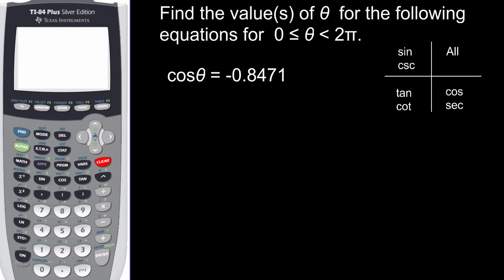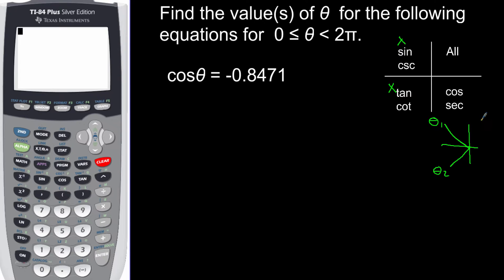Let's take a look at our first example: find the values of theta for the following equations, where zero ≤ θ < 2π — that's one full circle, one revolution. Now my function here is cosine of θ equals negative 0.8471. So cosine is negative, and I want to look at which quadrants cosine would be negative — that's quadrant two and quadrant three. So I'm going to have two different angles: theta one and theta two.